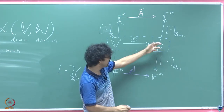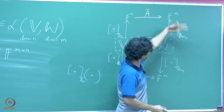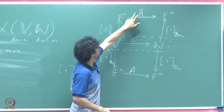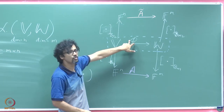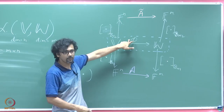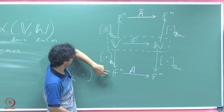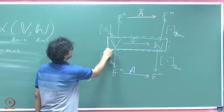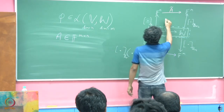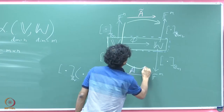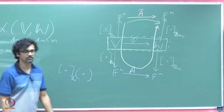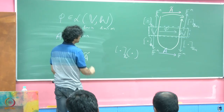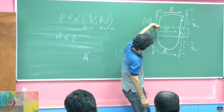Similarly, any object in W will be taken to an m-tuple corresponding to one choice of basis, and to some different m-tuple corresponding to a different basis for W. Now if I want to understand the relation between A̋ and A without always having to revert to what phi actually is, there is a way of doing that — because now these mappings are between F^n and F^n.